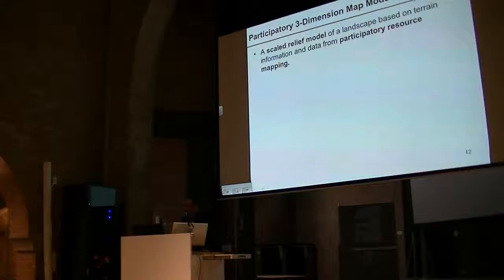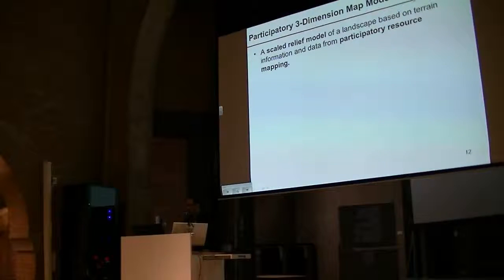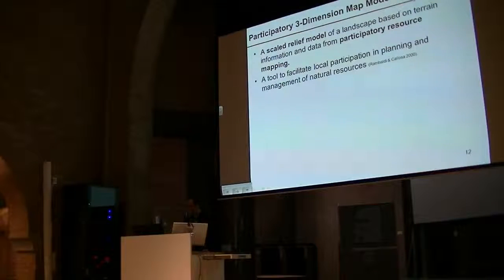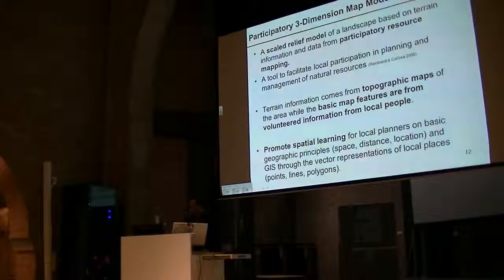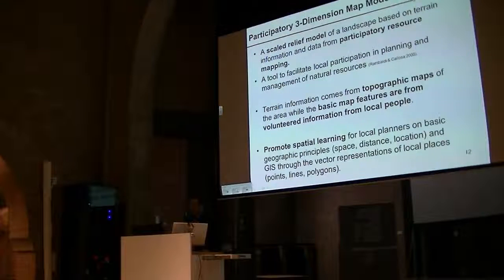The three-dimensional map model is a scale relief model of the landscape based on terrain information from topographic map data and information from the villagers through participatory resource mapping. It's a tool for us to facilitate local participation in planning and the management of natural resources. Terrain information comes from topographic maps of the area, while basic map features are volunteered information from local people. It is a way to promote spatial learning for local planners and basic geographic principles such as space, distance, and location.